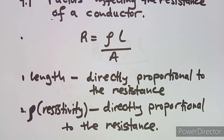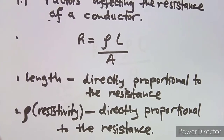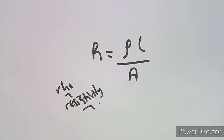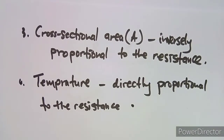The third factor is area. The cross-sectional area A is inversely proportional to the resistance of the conductor.